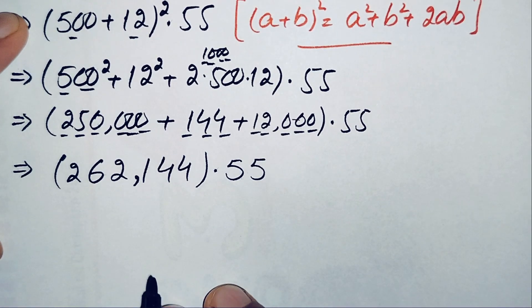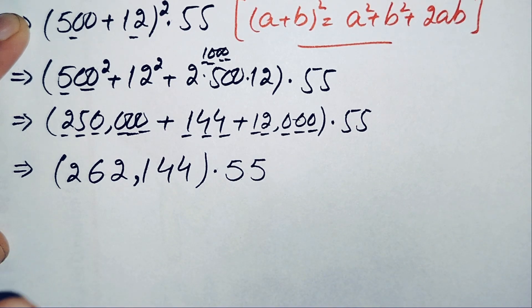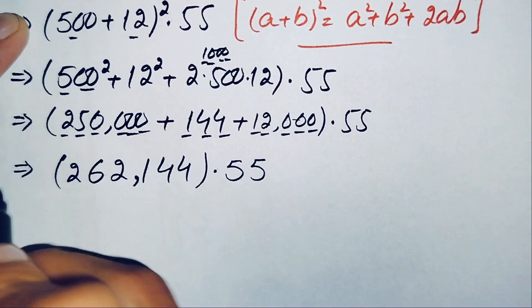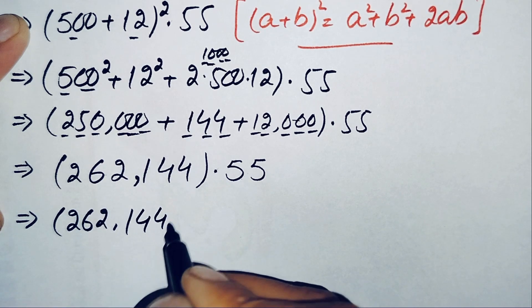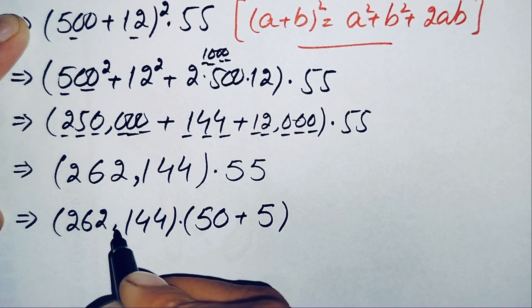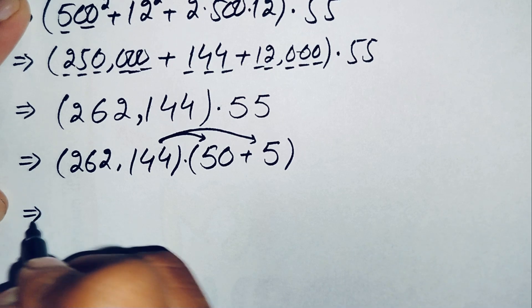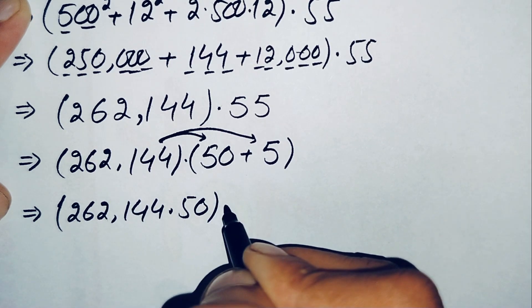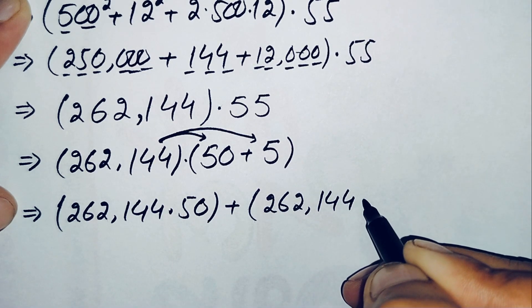Now we need to multiply 262,144 by 55. Instead of ordinary multiplication, we use a trick: write 55 as 50 plus 5. So the expression becomes 262,144 times 50, plus 262,144 times 5.